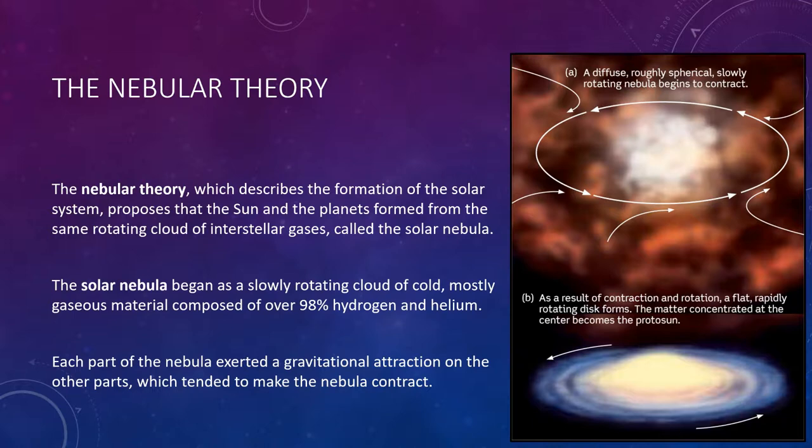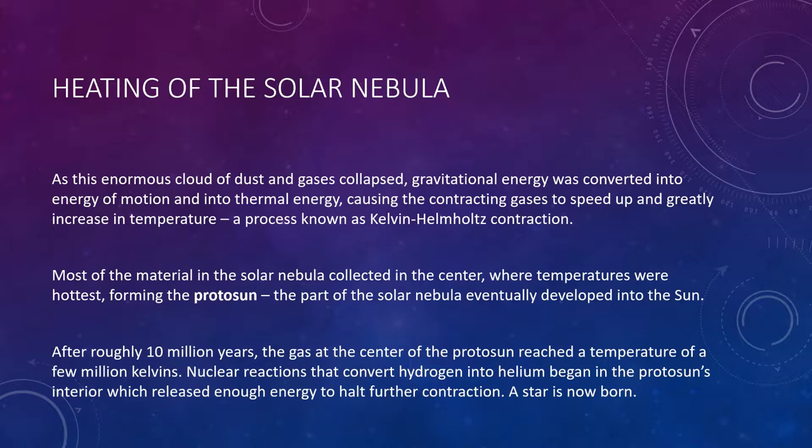As this enormous cloud of dust and gases collapsed, gravitational energy was converted into energy of motion, and that into thermal energy—in other words, heat—causing the contracting gases to speed up and greatly increase in temperature. This process is technically known as Kelvin-Helmholtz contraction.